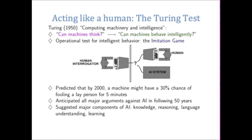Turing reformulated the question 'Can machines think?' by asking what it means to think. We can't directly understand how people think, but we understand how people think by looking at how they behave. So he reformed the question to: can machines behave intelligently? And he developed an operational test for intelligent behavior, which he called the imitation game.